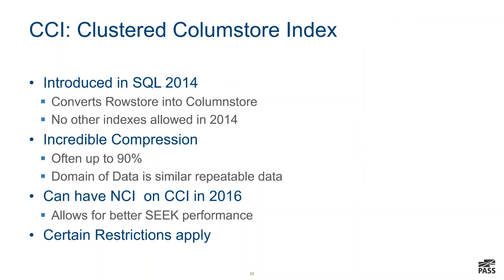The clustered column store index was launched in 2014 and it converted your row store into a column store — you had incredible compression, often up to 90%. We actually got a little better than 90% with this customer. You can also have a non-clustered row store index on top of your clustered column store index. This is one of the things we did with our fact table — we had our fact table as a clustered column store index in 2016, and we put a non-clustered row store index on top of that in order to have better seek performance within the row group and also on the delta store.